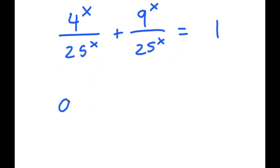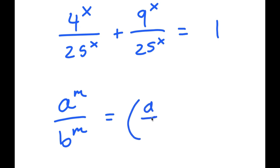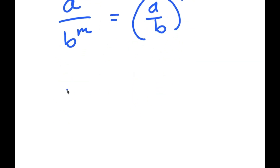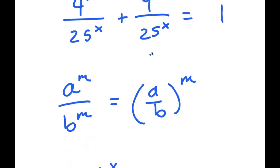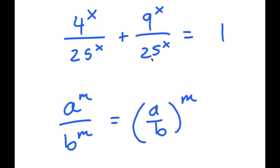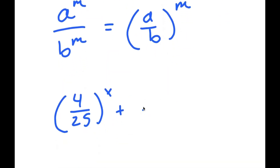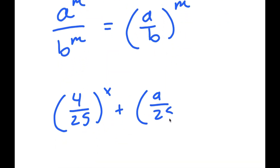Now, if I have something in the form a to the power of m over b to the power of m, this is equal to a over b to the power of m. So 4 to the power of x over 25 to the power of x turns into 4 over 25 to the power of x, and 9 to the power of x over 25 to the power of x turns into 9 over 25 to the power of x.